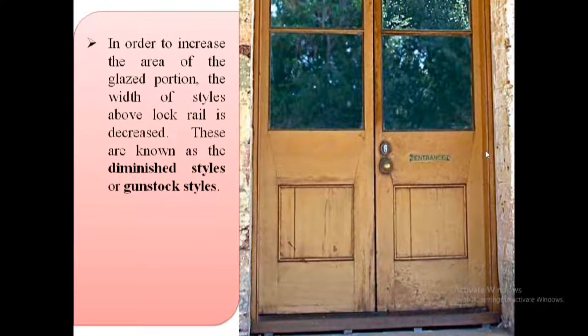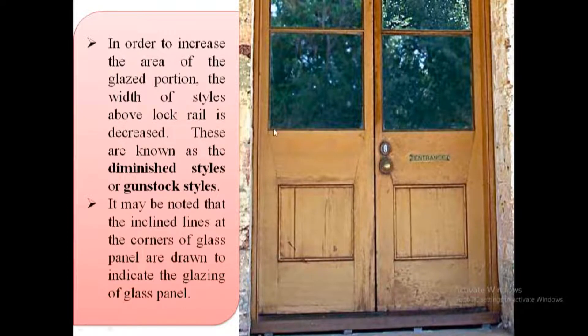Partially glazed doors are sometimes provided with styles which gradually diminishes at the lock rail. This is to improve the appearance and to permit more area for the glazed panels.